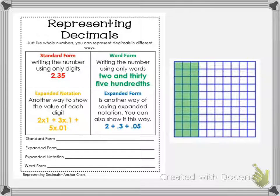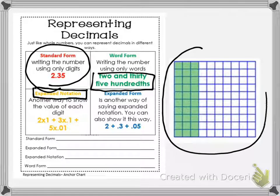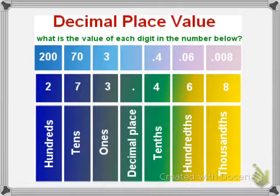Some ways of representing decimals is using the standard form, just writing it regularly, writing it in word form, expanded form, and using a grid. Or we can just show a decimal place value model, just like this.